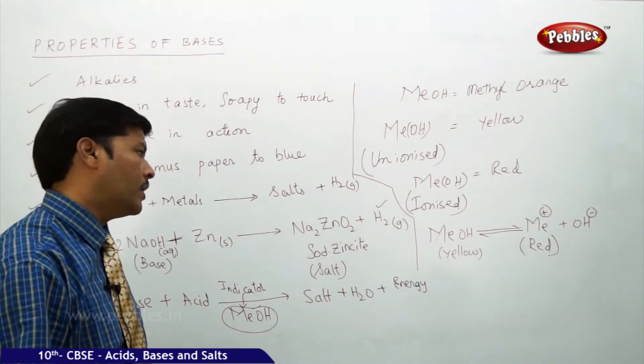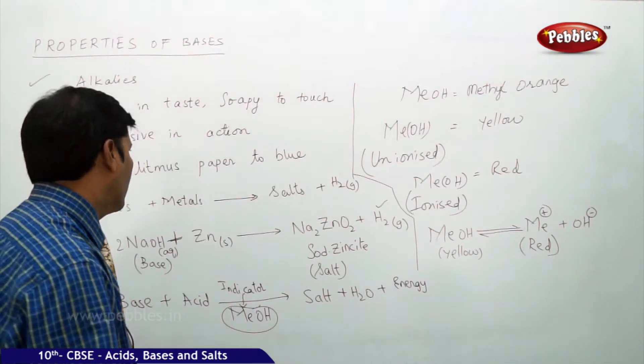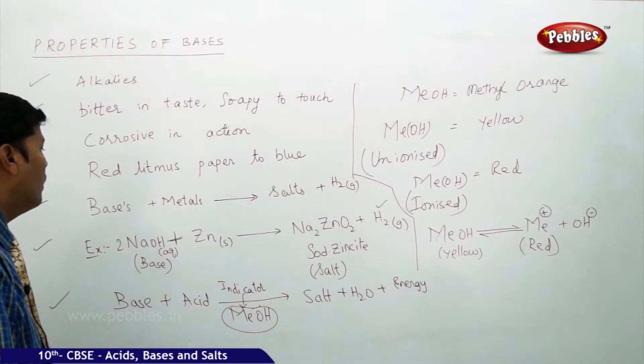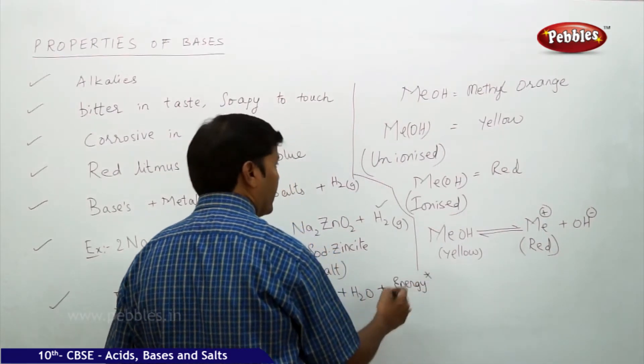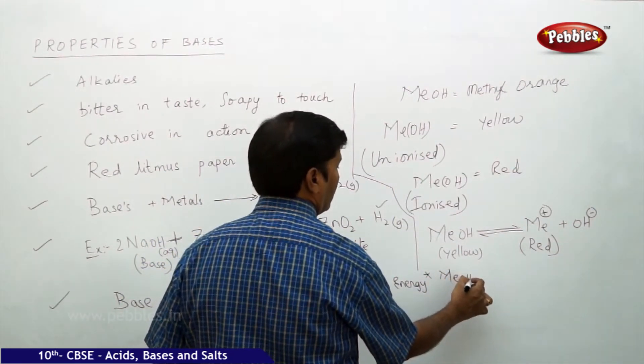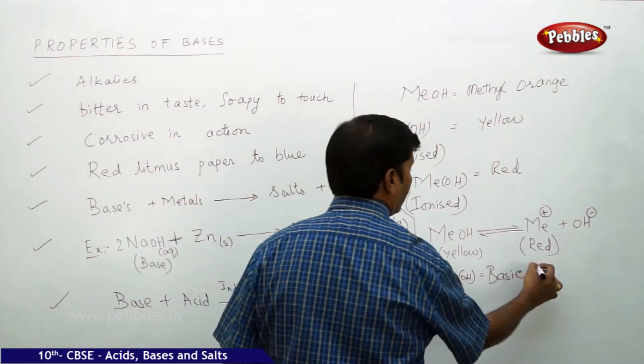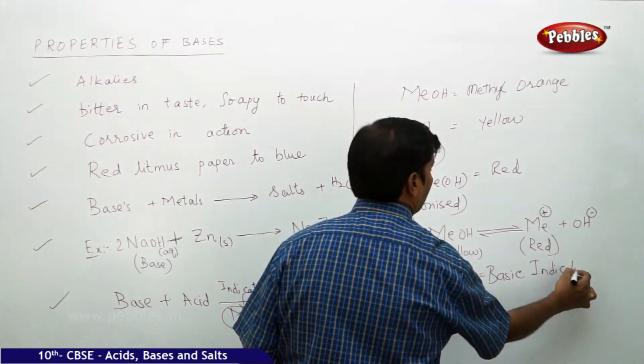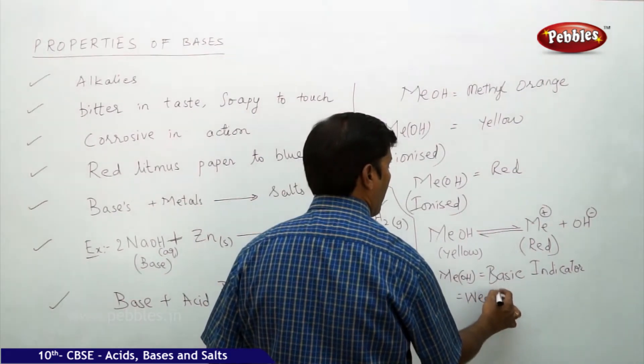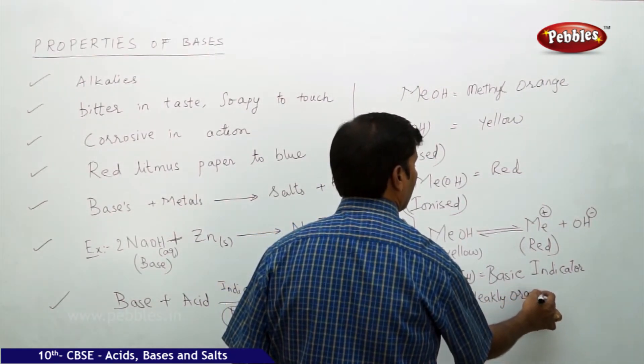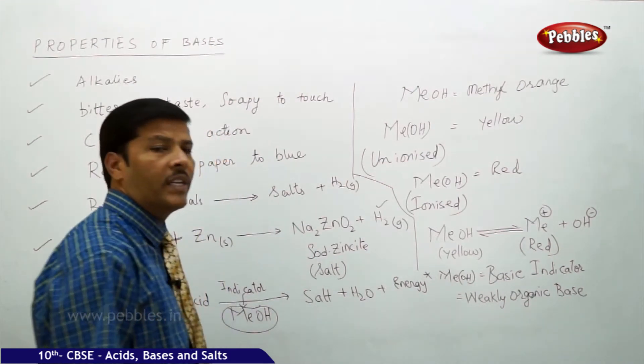In the unionized state, methyl orange is yellow color, and in the ionized state, it is red in color. That is why we always say methyl orange is a basic indicator because it is a weakly organic base.